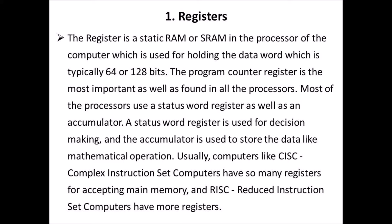Usually, computers like CISC — that is, Complex Instruction Set Computers — have so many registers for accessing main memory, and RISC — that is, Reduced Instruction Set Computers — have more registers.